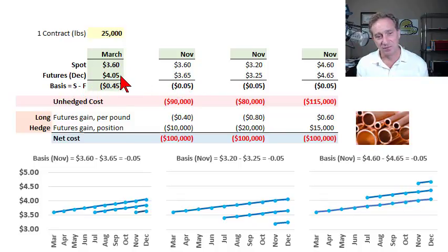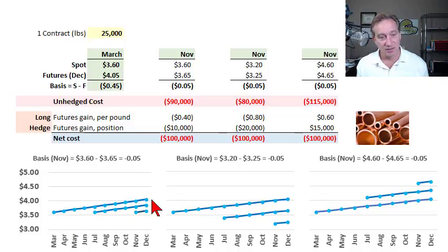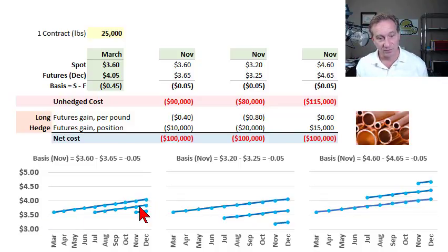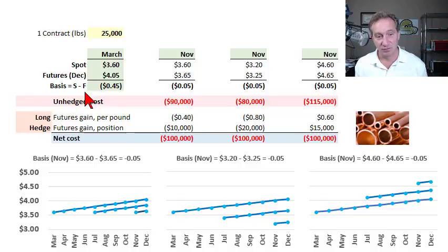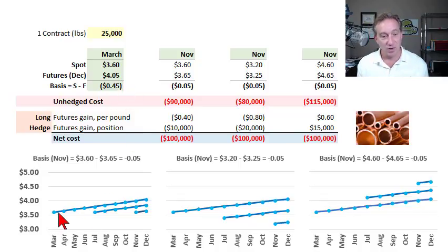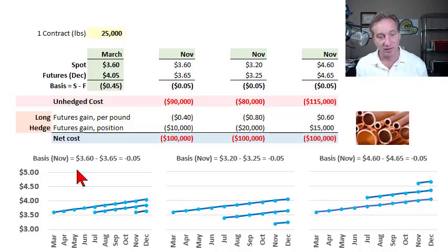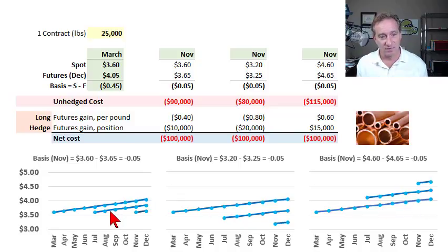I'm assuming the December futures contract price today is $4.05. You can see the spot price is about $3.60 and the December futures price is $4.05 — upward sloping, which we call a normal curve or technically a contango. The basis calculation is simply spot minus futures price. In this case, $3.60 minus $4.05 is negative $0.45. When we have a contango forward curve, we get a negative basis because the futures price is above the spot price.